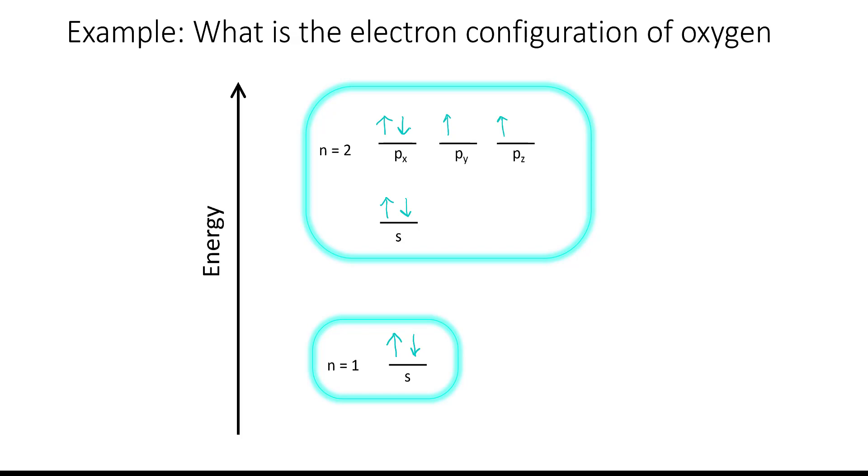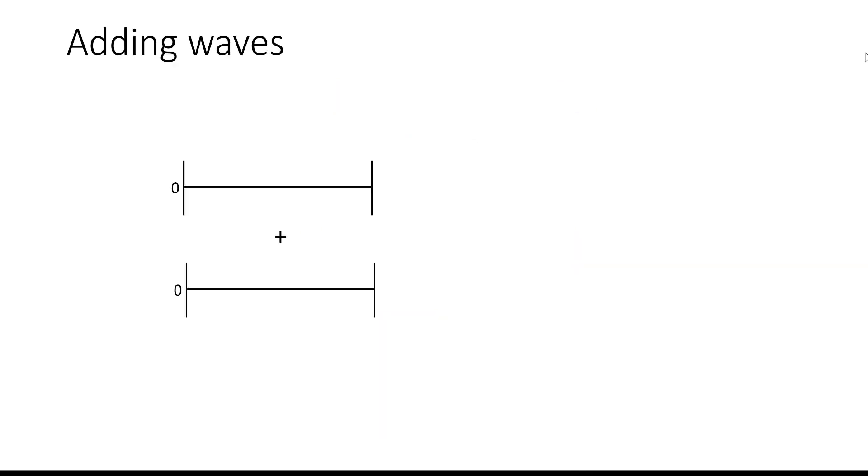Alright, so here's the ground state configuration of an oxygen atom. The reason why we're talking about all of this orbital stuff is because we want to use orbitals to help us understand how atoms are bonding in organic chemistry. But before we do that, let's go back to our one dimensional wave analogy and let's talk about how waves are added.